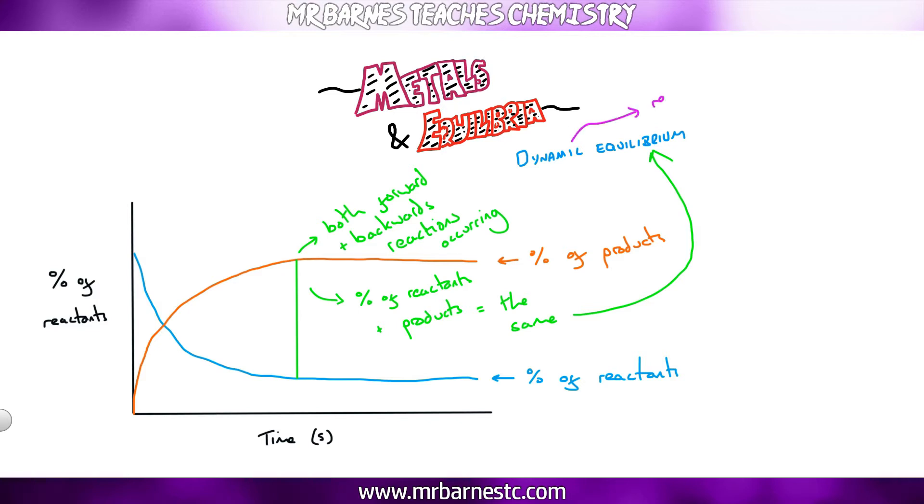So the dynamic part means both reactions are still occurring. Ammonia is breaking down into nitrogen and hydrogen. Nitrogen and hydrogen are reacting to make ammonia. The equilibrium part means that the actual percentage, the amount of nitrogen and hydrogen and the amount of ammonia is staying exactly the same. Now this must be in a closed environment. So basically no gases should be allowed to escape or enter.